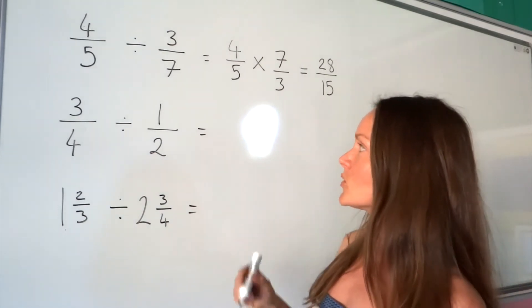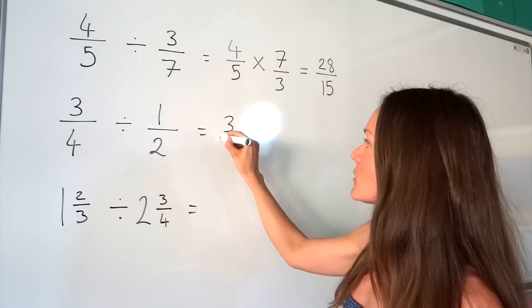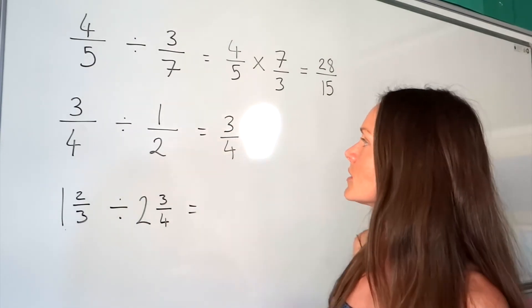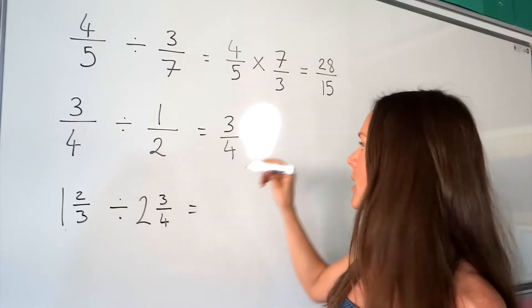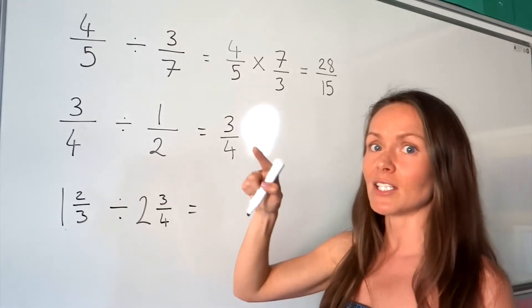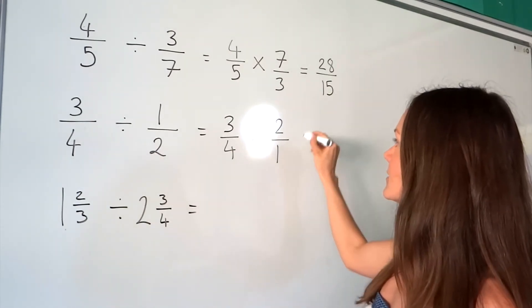Now, example number 2. So I'm going to start exactly the same way. I'm going to write out the first fraction again, 3 quarters. Now I'm going to change the divide symbol to multiply. And this second fraction, I need to turn upside down. So the 2 is now on top and the 1 is underneath.